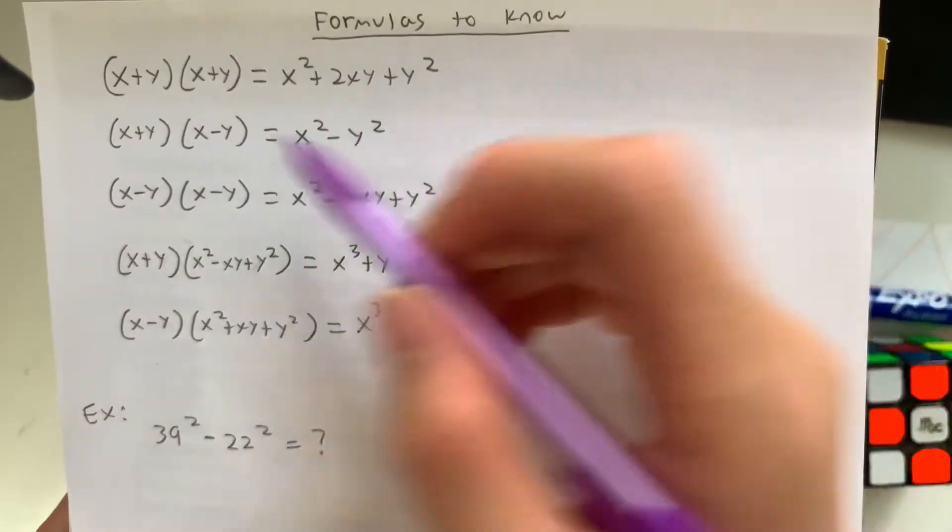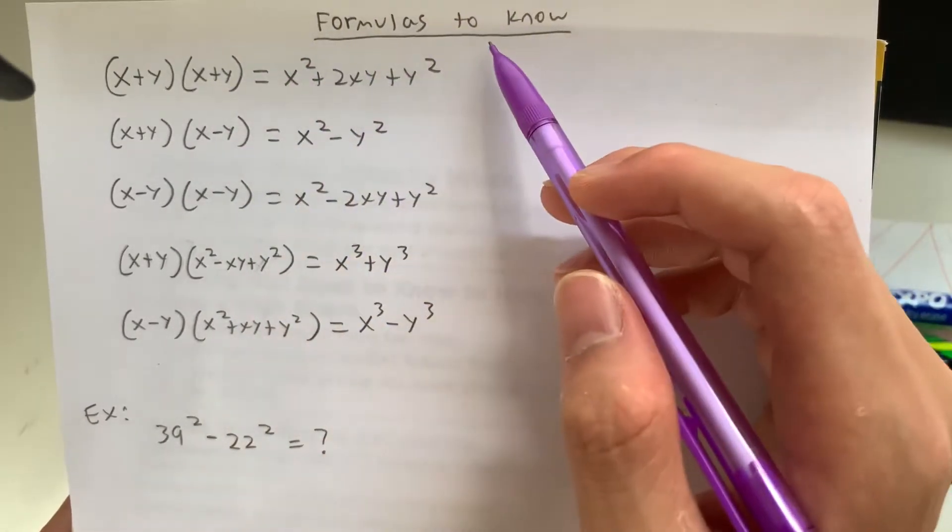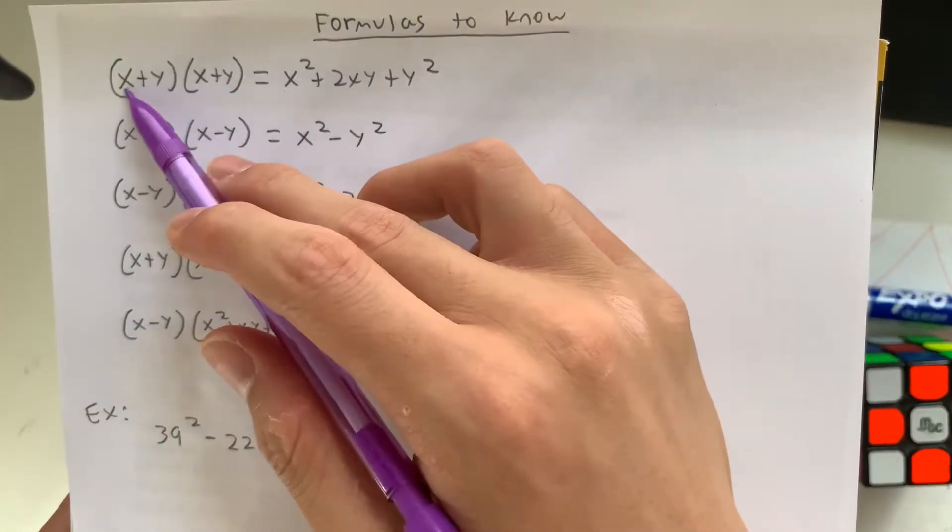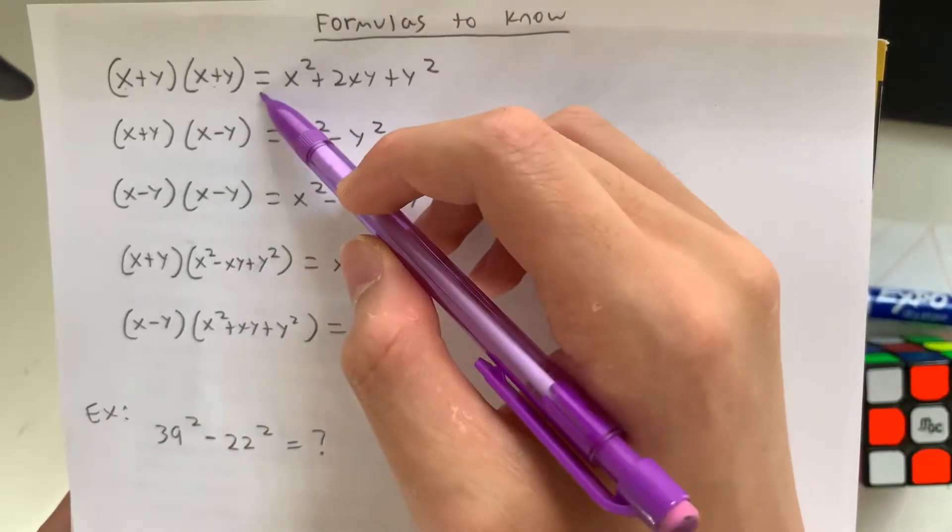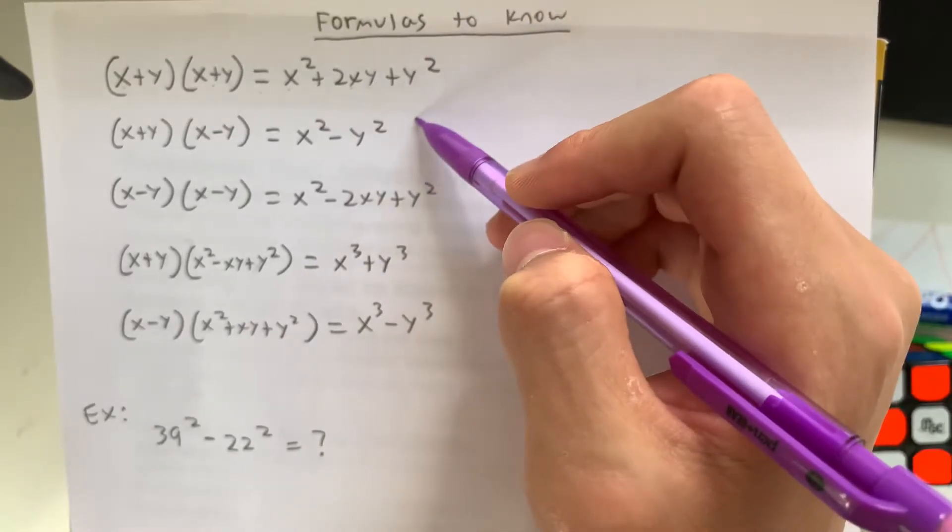The first one we have is x plus y times x plus y. This is all about distributing, and if you distribute this x plus y times x plus y, it's going to equal x squared plus 2xy plus y squared. So that's probably the simplest one.